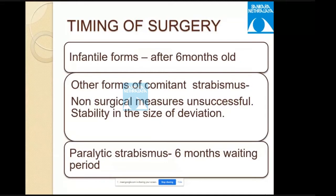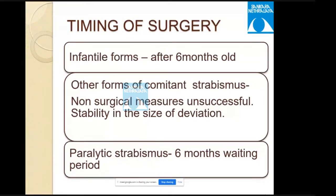A question was asked: how do you know that stability has been achieved in comitant strabismus? The answer is that we measure the deviation, and using the HES chart we can also identify stability. So there is both a subjective way and an objective way — objective by direct measurements, and subjective by the patient's HES charting.